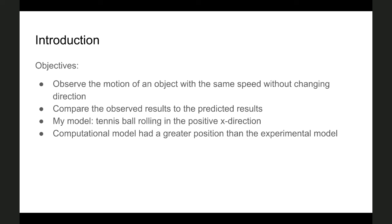For this lab, we were instructed to observe the motion of some object that is moving at constant velocity without changing direction. The purpose of the lab was to create a position versus time graph for the observed motion, and then create a computational model in order to produce a position versus time graph of the model motion. In the end, we were supposed to compare the two lines produced by the position versus time graphs for the observed and model motions.